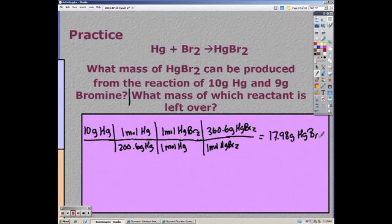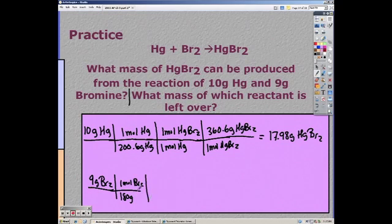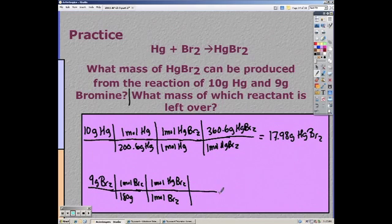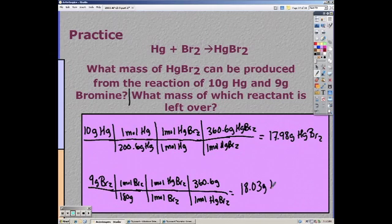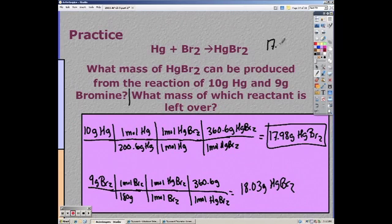So then I need to convert my 9 grams of bromine to mercury dibromide. Doing that, you get 18.03. So 17.98 grams is my answer, and mercury is my limiting reactant.